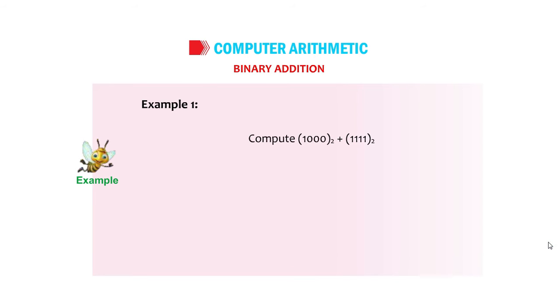Example 1: Compute (1000) base 2 plus (1111) base 2. 1000 plus 1111 equals 10111.